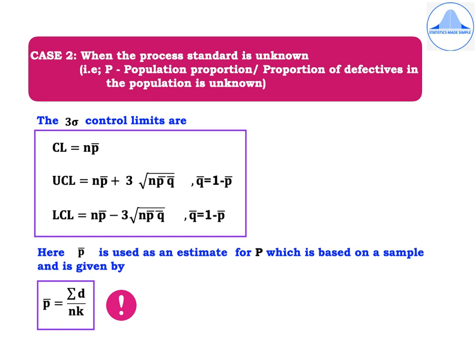Case 2 is when the process standard is unknown, that is capital P the population proportion of defectives in the population is unknown. Then the 3-sigma control limits are given by CL equals NP-bar, UCL equals NP-bar plus 3 times root NP-bar Q-bar, where Q-bar equals 1 minus P-bar.